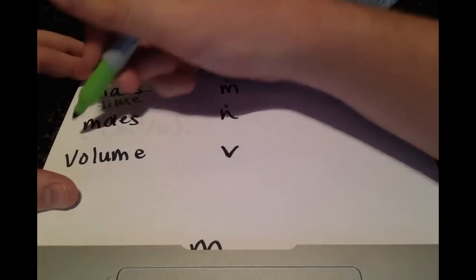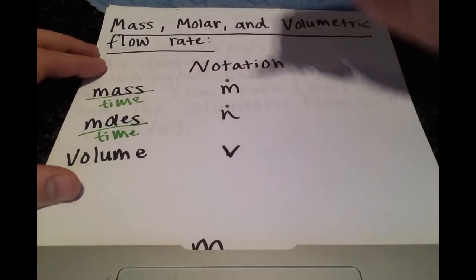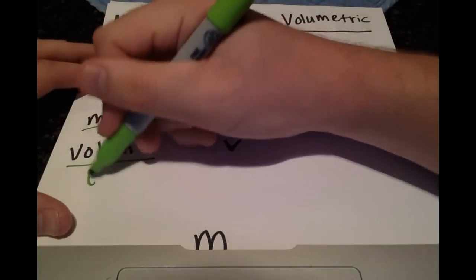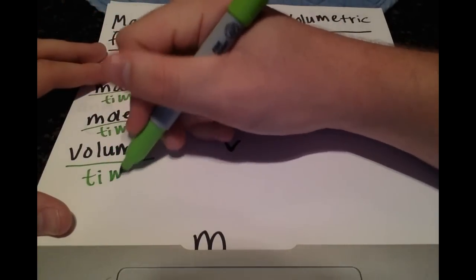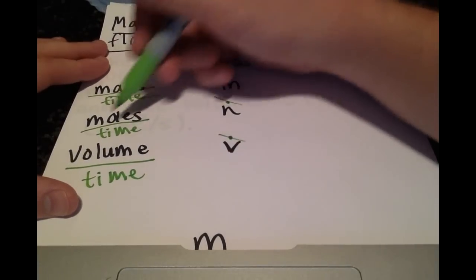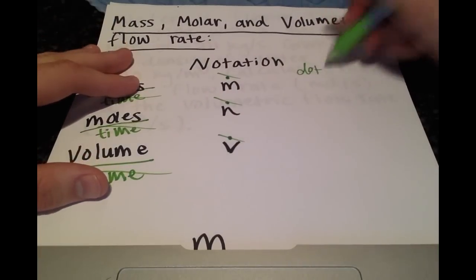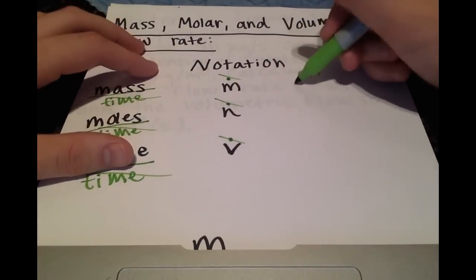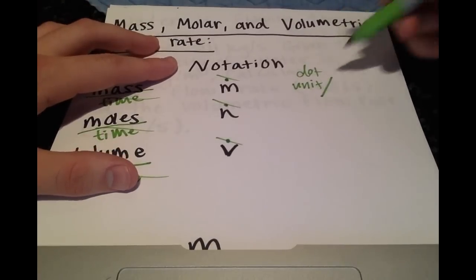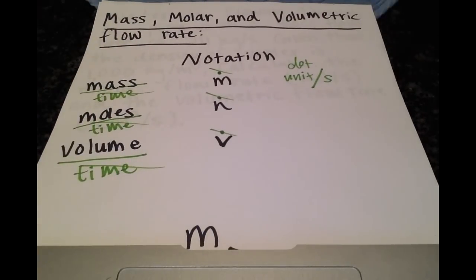So N with a dot above it is the moles flowing over time, and volume with a dot over it is the volume flowing over time. And as soon as you get rid of these dots, you get rid of the time component. So adding the dot just means you're taking the unit that you're given and you're dividing it by seconds usually, or another unit of time, but that's the most common one.